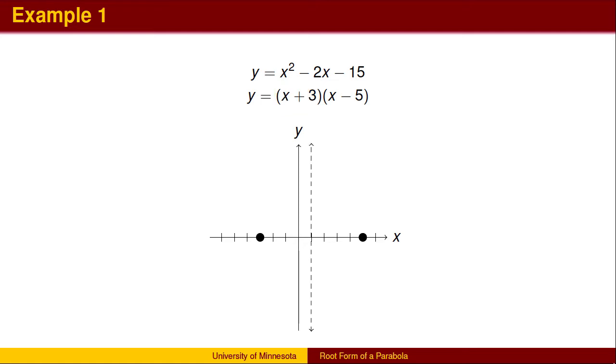Once we have established the roots, we have a good start to graphing the parabola. Next, we can find the axis of symmetry, which will be halfway between the roots. In this case, the axis of symmetry will be at x equals 1.